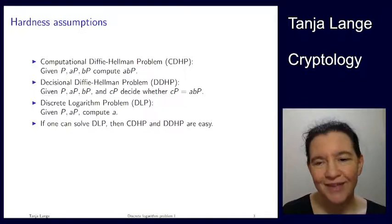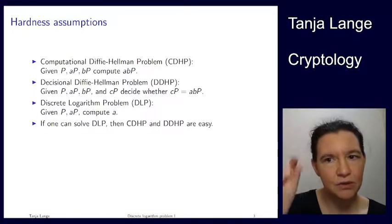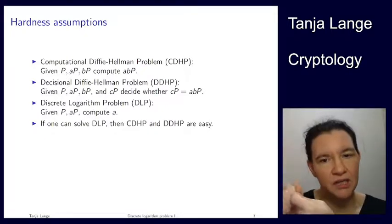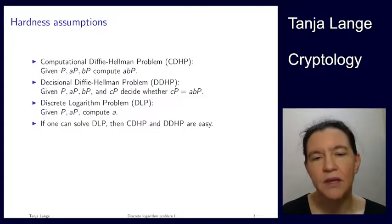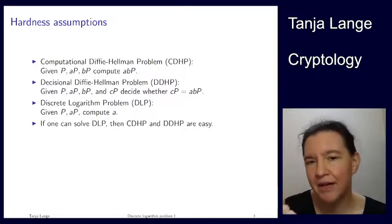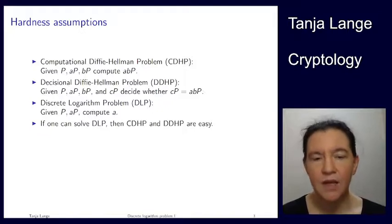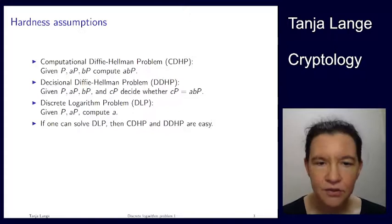If an attacker can solve the DLP, they can recover Alice's private key from her public key, and then they can do everything Alice does in the protocol. When Alice knows her secret key, she can compute the shared key. So if an attacker can solve the DLP, they can also solve the CDHP. And if you can compute ABP, you just compare it to C times P and decide whether it's equal or not.